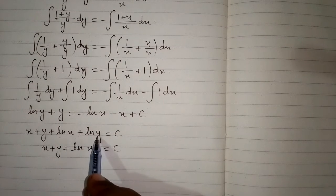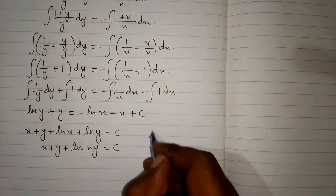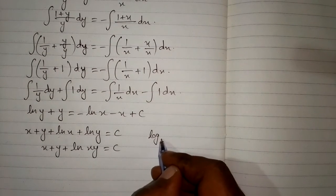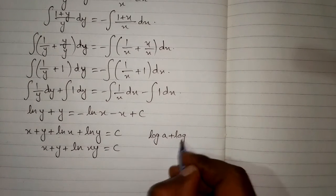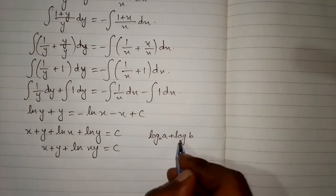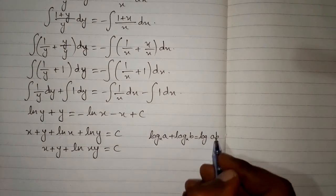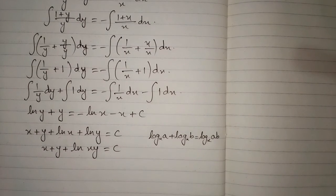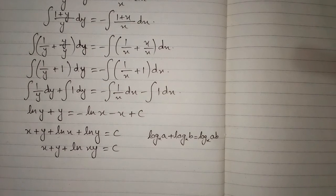This uses the property that ln x plus ln y equals ln(xy), which is the log rule: log base x of a plus log base x of b equals log base x of ab. Applying this property, we obtain the required solution: x plus y plus ln(xy) equals c.